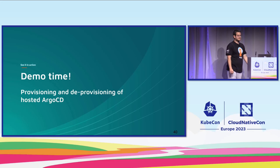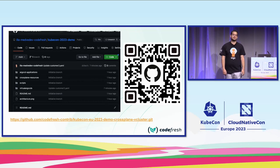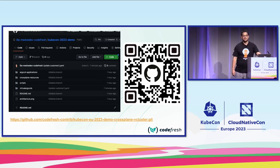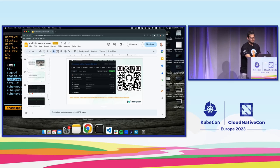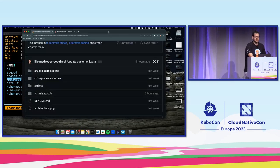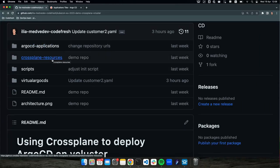Now it's time to show a live demo. Because Upbound — who owns Crossplane — are sponsoring the Wi-Fi for this event, I'm going to YOLO it and do it live. The demo is inside this repository; you can access it by scanning the QR code, and there's a README with instructions to run it yourself. I'll show behind the scenes how it looks when we provision and deprovision hosted Argo CDs. The repository has three folders: Argo CD applications, Crossplane resources, and virtual Argo CDs.